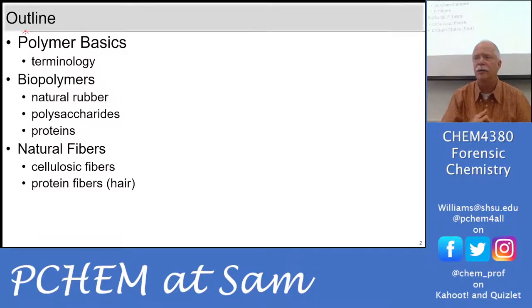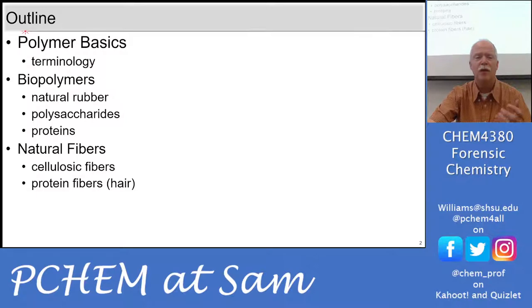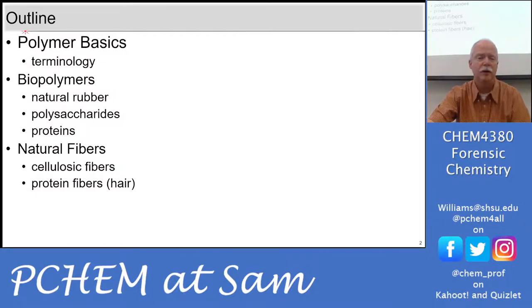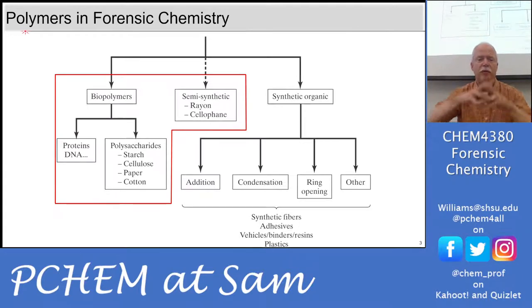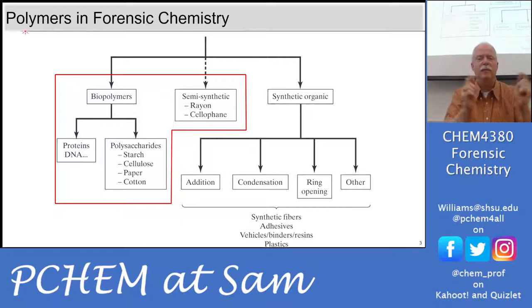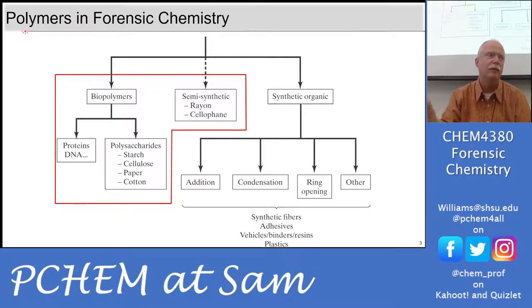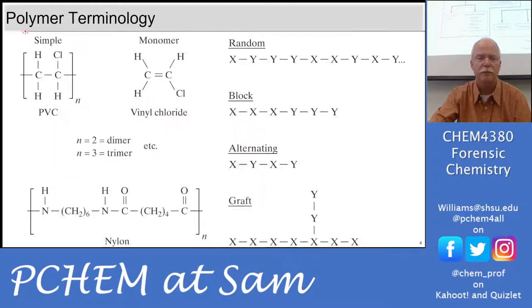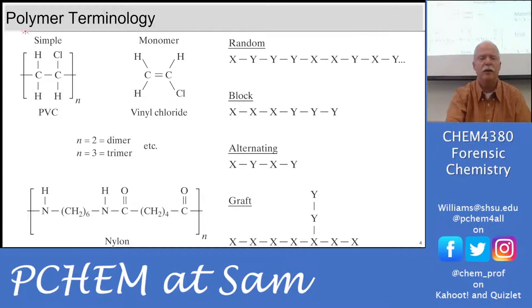We'll go over polymer basics and terminology, get into biopolymers and talk about natural rubber, polysaccharides, and proteins, then talk about natural fibers like cellulosic fibers and protein fibers. The most common protein fiber would be hair. DNA is obviously a polymer, but it's not really macroscopic like a fiber. Here's the landscape of polymers we're going to talk about in forensic chemistry — we're over in the red box covering natural fibers and semi-synthetic fibers, and then we'll do synthetic organic fibers next time.